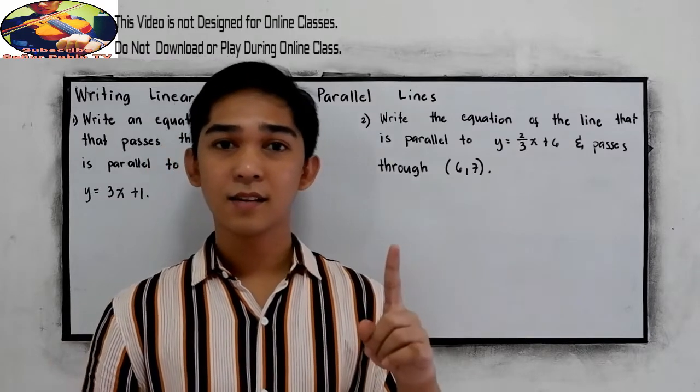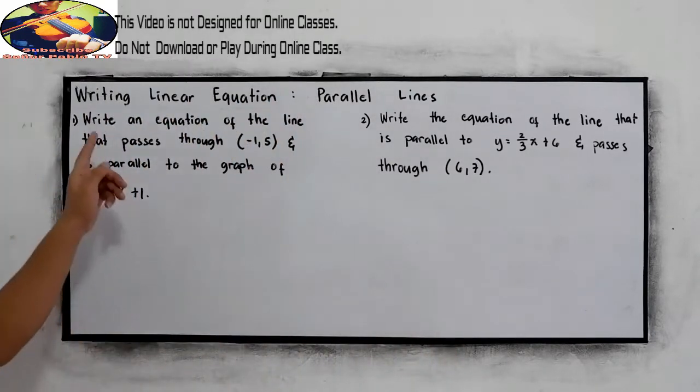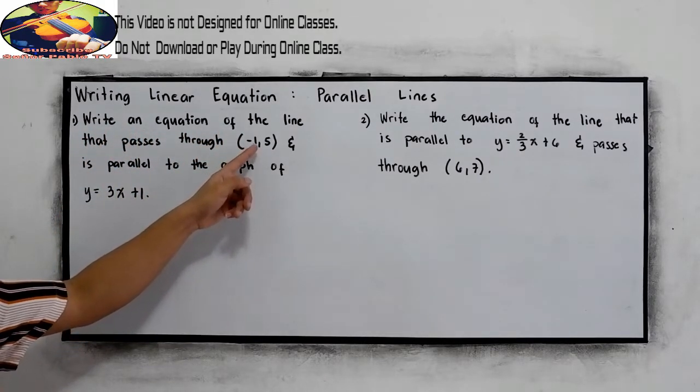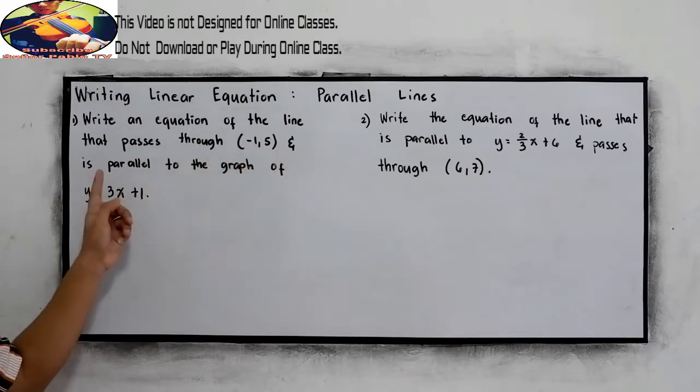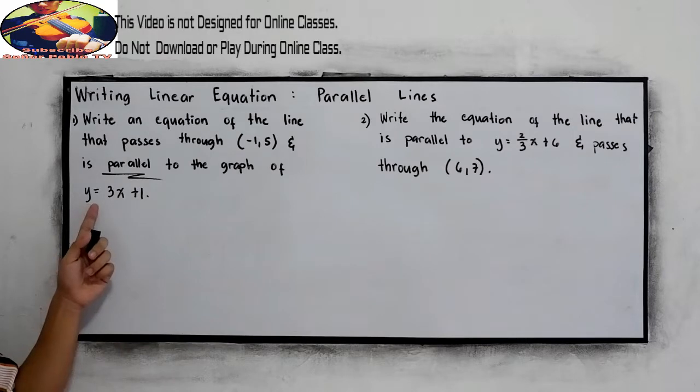Let's have this example number one. Write an equation of the line that passes through negative one comma five and is parallel to the graph of y is equal to 3x plus one.